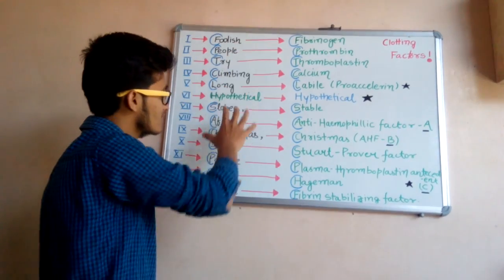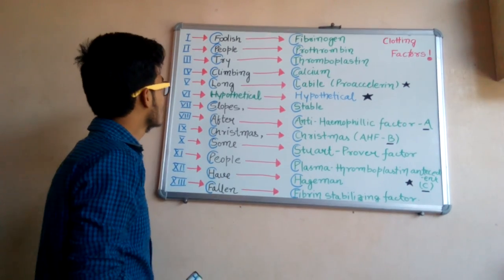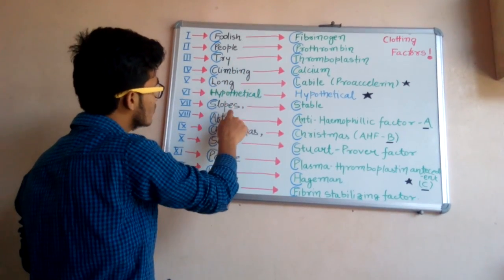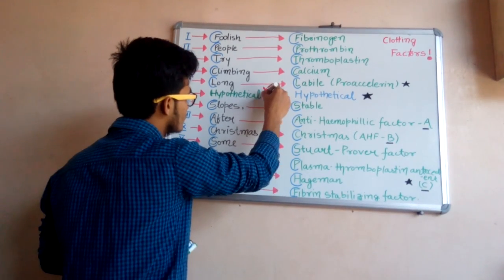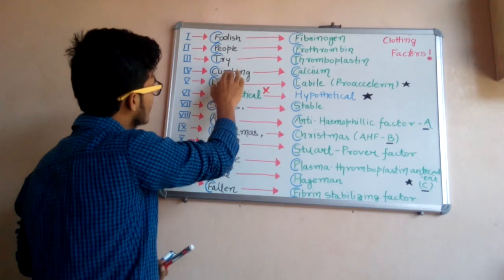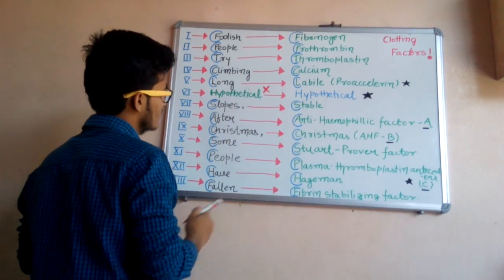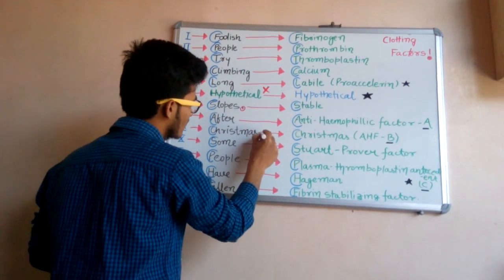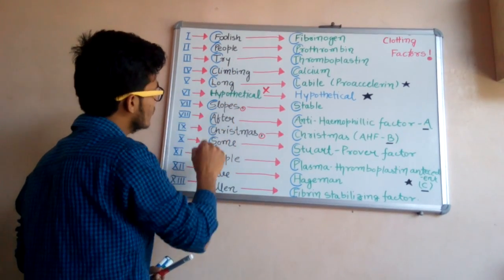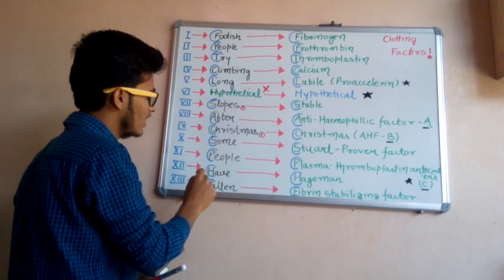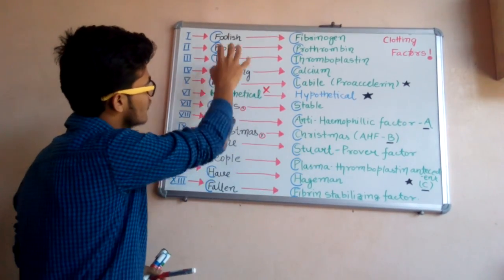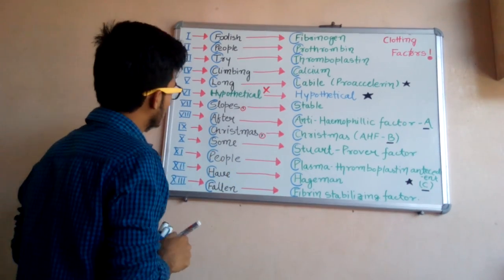The mnemonic sentence is: 'Foolish people try climbing long slopes after Christmas, some people have fallen.' You have to memorize this particular sentence. Note there is a comma after 'slopes,' so give a slight pause there. This simple English sentence will help you memorize all the clotting factors.